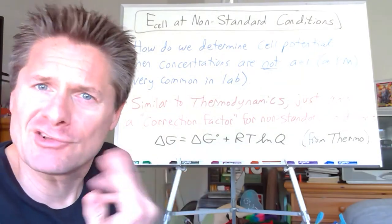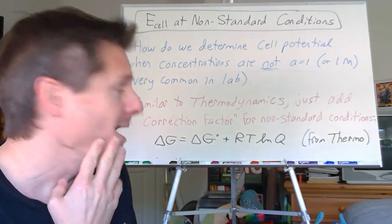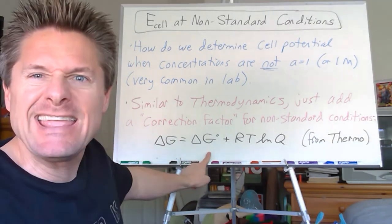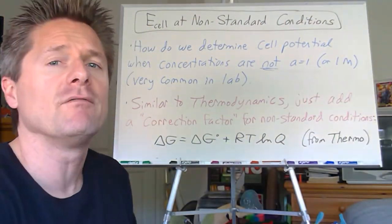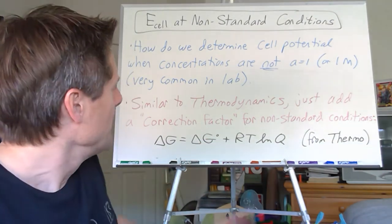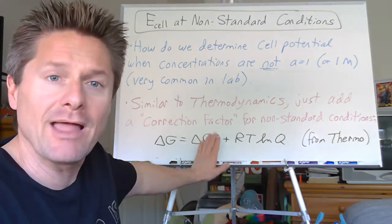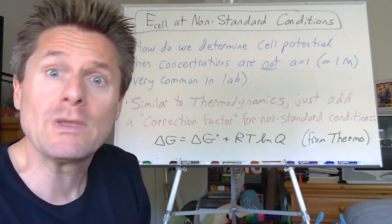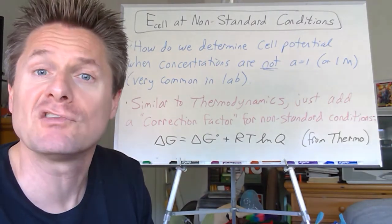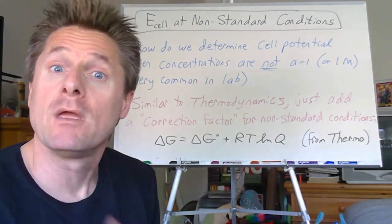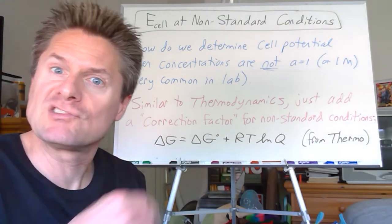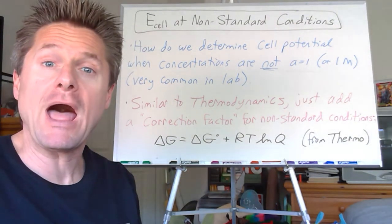Remember Q is a lot like the equilibrium constant, just with initial or non-standard conditions. That was one of the big three from thermodynamics. Well, maybe we can utilize this and treat electrochemistry the same way — there's a lot of overlap and similarity between the equations. I wonder if E-cell at non-standard conditions is just E°-cell at standard conditions plus some correction factor dealing with concentrations not being at one molar. Isn't there an equation that relates ΔG° to electrochemistry? Let's derive the Nernst equation on the next board.